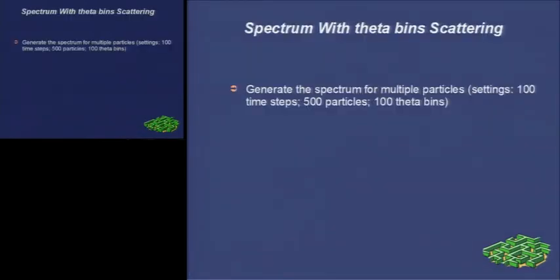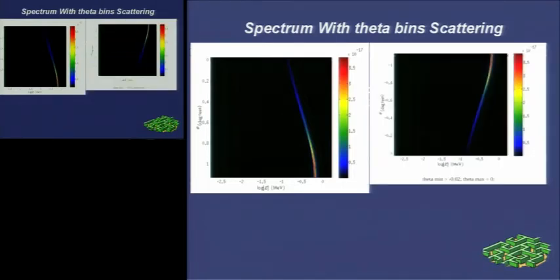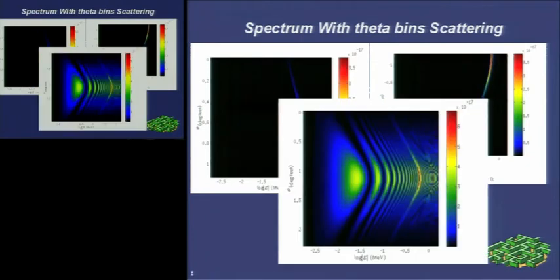Then, 500 particles are evolved. This one is ranging from 0 to 0.02. And this one from minus 0.02 to zero. And this is ranging from minus 0.02 to 0.02.